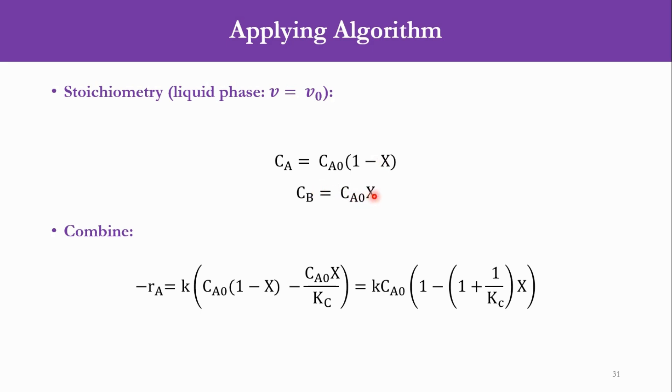Now we will put the value of CA here and CB here. So -rA = K[CA0(1-X) - CA0X/Kc]. Since CA0 is a common parameter, it will come out and that equation will become K×CA0[1 - (1 + 1/Kc)X]. Obviously we need to know the value of K and the value of Kc. If we get these values, we can solve our system.